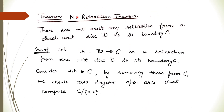Now the next is the No Retraction Theorem. Brouwer's Fixed Point Theorem in two dimensions depends on this theorem. To prove Brouwer's Fixed Point Theorem in 2D, we first prove the No Retraction Theorem, which states: there does not exist any retraction from a closed unit disk to its boundary.